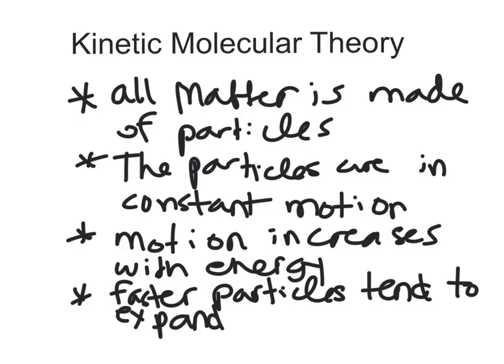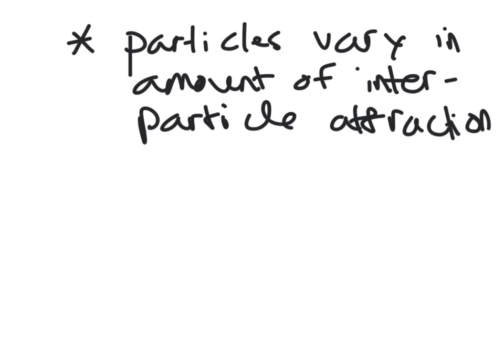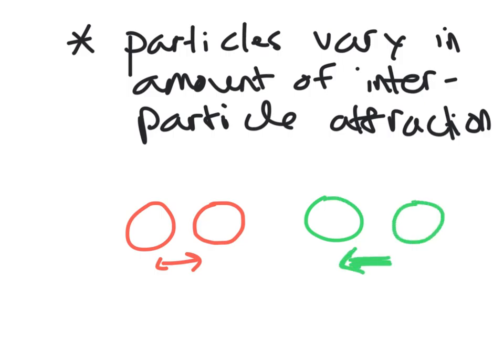And then the last bullet, which won't really fit on this page, so I'll put it on the next one, particles actually vary in the amount of interparticle attraction. So if I have two particles that, we'll call them red particles, that are near each other, they might have a weak attraction for each other, whereas these two green particles might have a very strong attraction for each other.